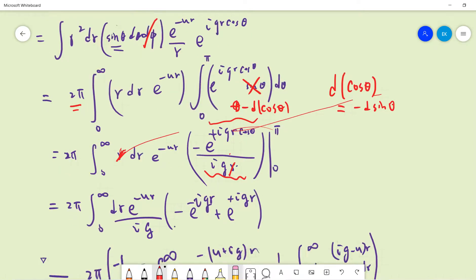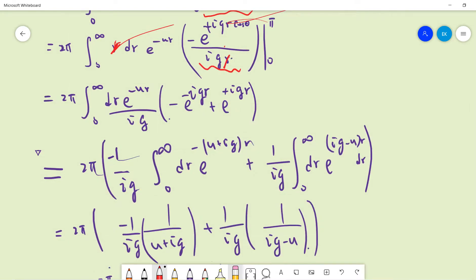When theta equals π, you get the negative exponential minus iqr because cosine π is negative 1, and at 0 it's positive 1. So you get this. Now separate into two terms: first term, second term.